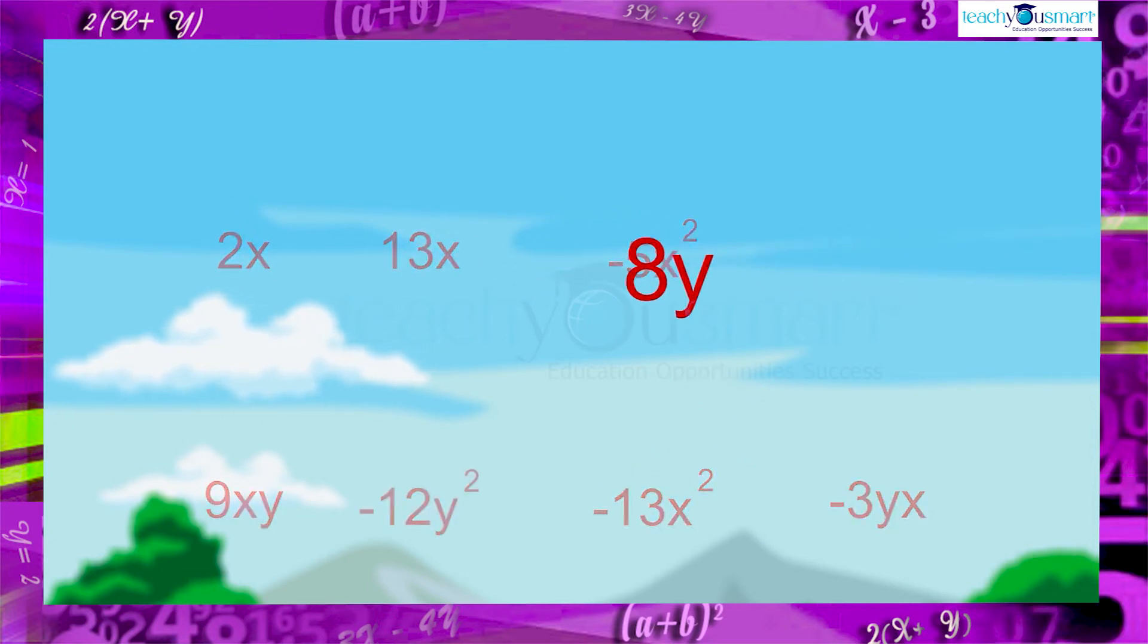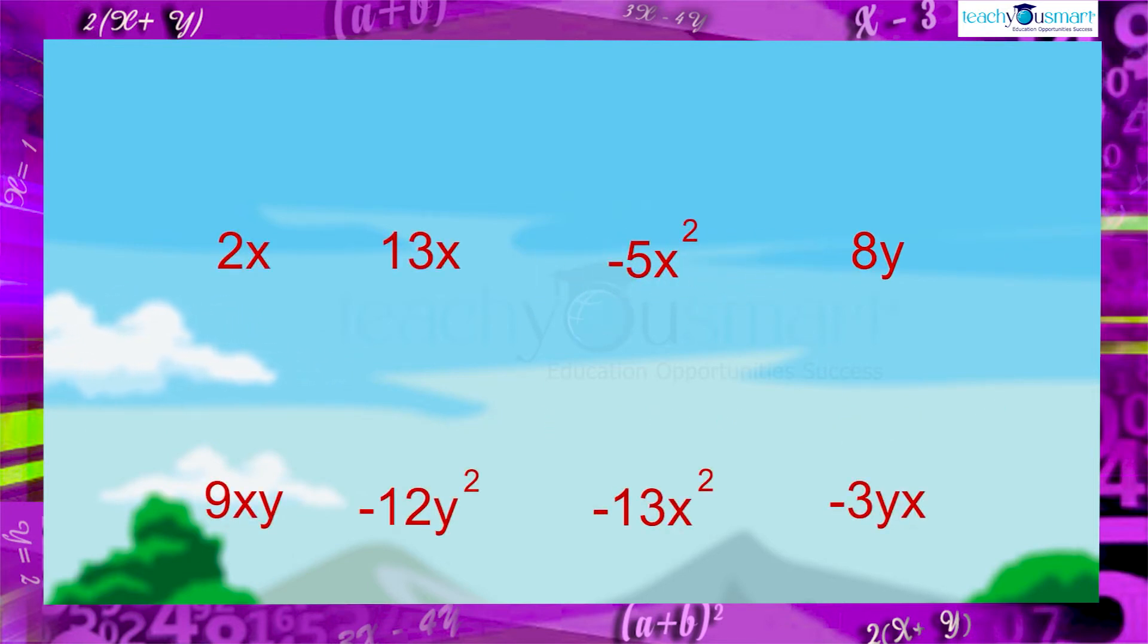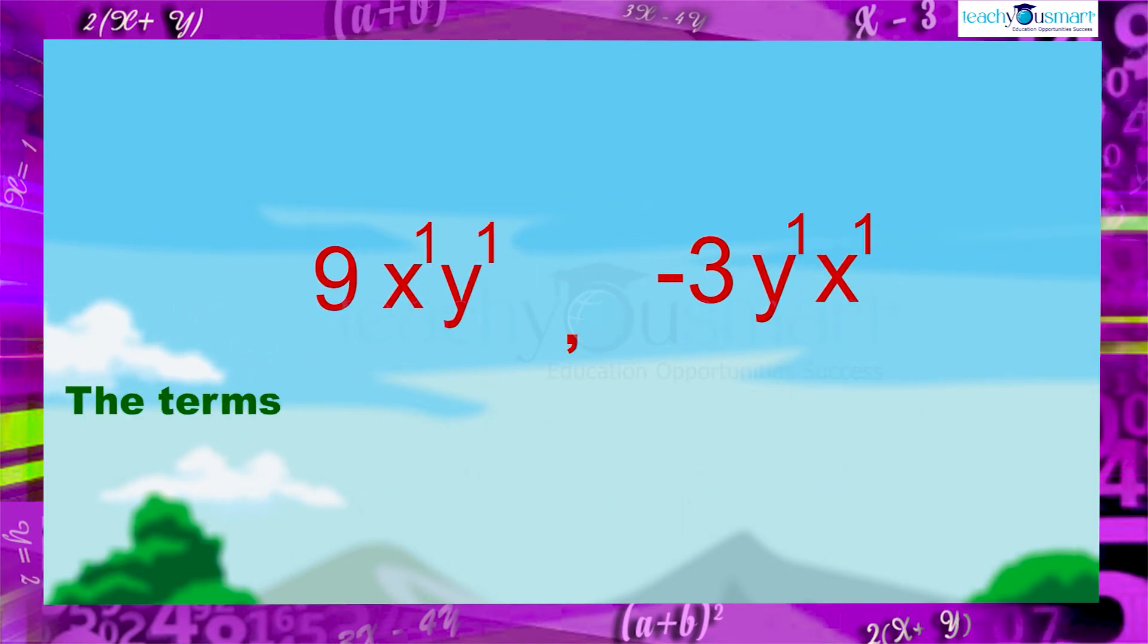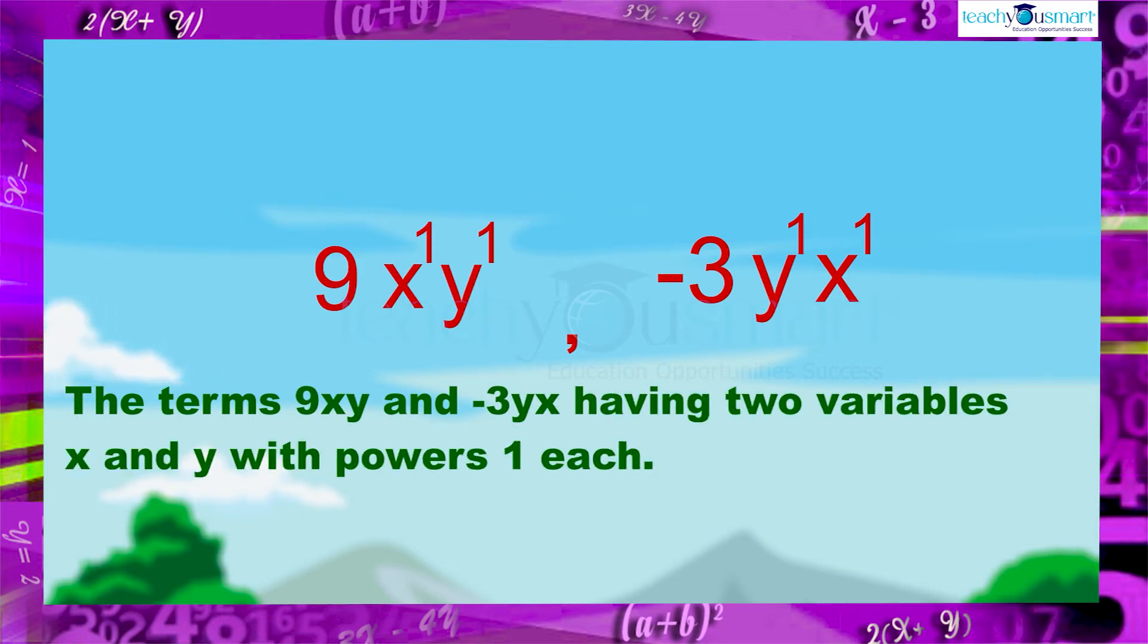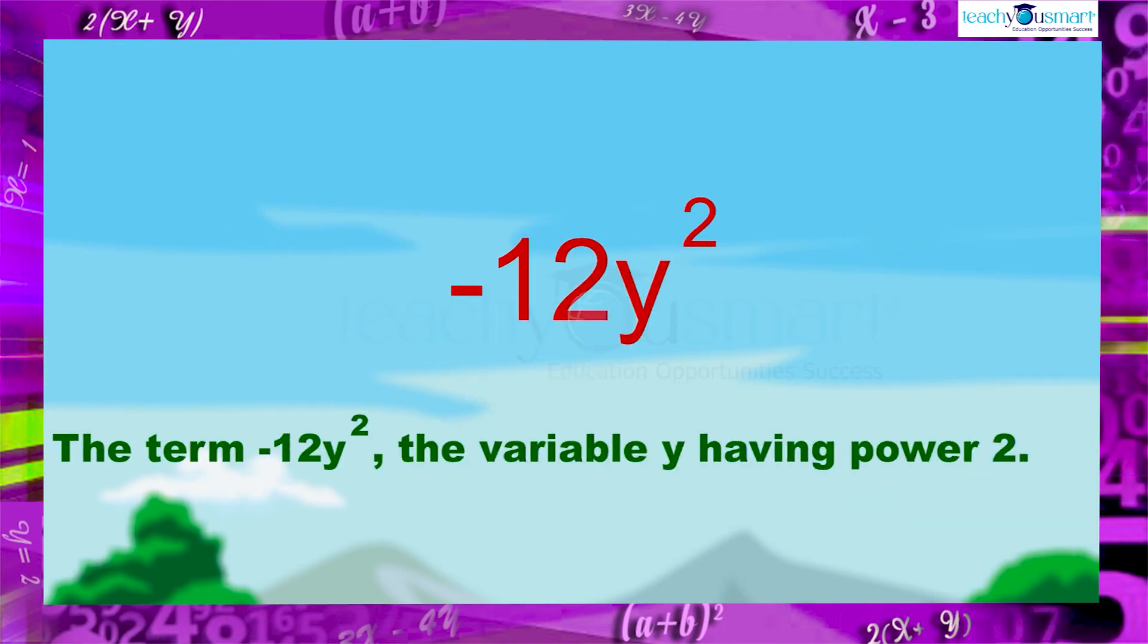The term 8y has the variable y, with power 1. The terms 9xy and minus 3yx have two variables x and y, with powers 1 each. In the term minus 12y square, the variable y has power 2. But there is no other term having variable y with power 2.